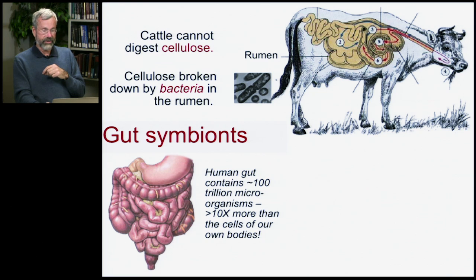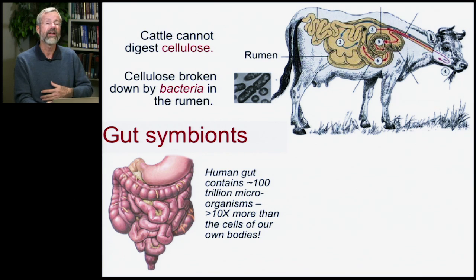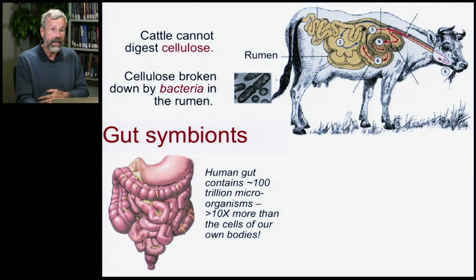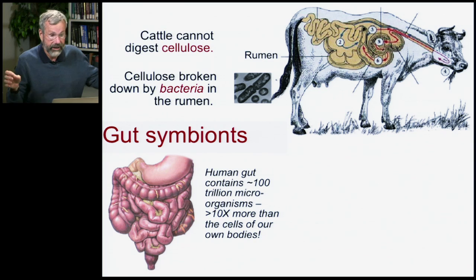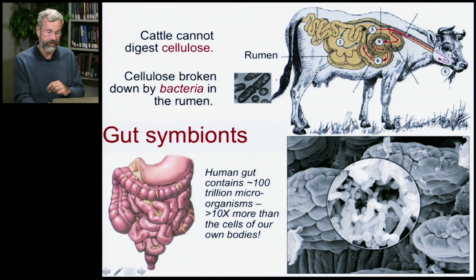And it's not just cows. Our guts contain a hundred trillion microorganisms — vast numbers of bacteria living in our intestines. That's ten times as many cells as we have in our own bodies. So if you're just counting up cells, we are mostly gut symbionts being carried around by this animal shell. Looking closely at the intestinal wall, there are masses of bacteria there, and they help us to digest our food.